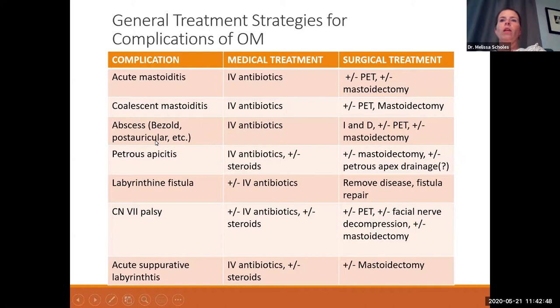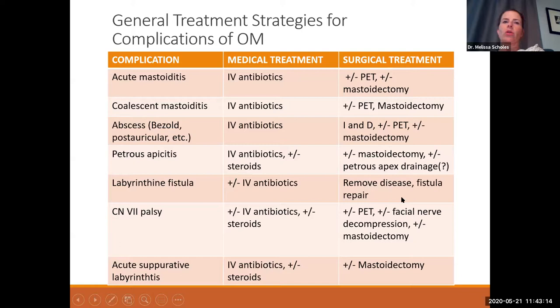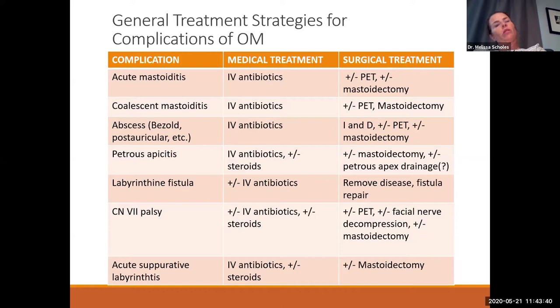Petrous apicitis usually requires mastoidectomy to open up the drainage pathway from the petrous apex. A clear drainage pathway to the mastoid makes opening the petrous apex itself unnecessary. For labyrinthine fistula — removal of disease and fistula repair — there's a high rate of hearing loss. Facial nerve palsy in young kids can occur even without a really inflamed-looking ear; we treat with IV antibiotics and ear tubes, and debate steroids, though benefit is minimal. Facial nerve decompression and mastoidectomy are usually not necessary in acute otitis media but may be needed in more chronic settings.